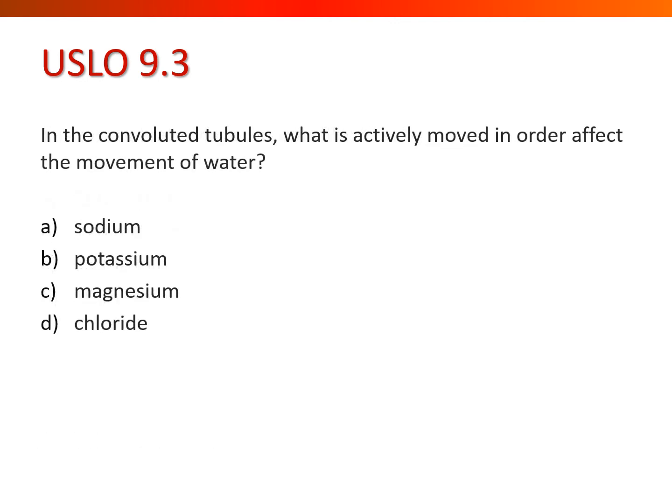In the convoluted tubules, what is actively moved in order to affect the movement of water? The answer is sodium. In the convoluted tubules, particularly the distal convoluted tubules, we see the movement of sodium in order to affect the movement of water. There are no mechanisms to passively allow water to go where it will — there's always something enticing water to move from one area to another.